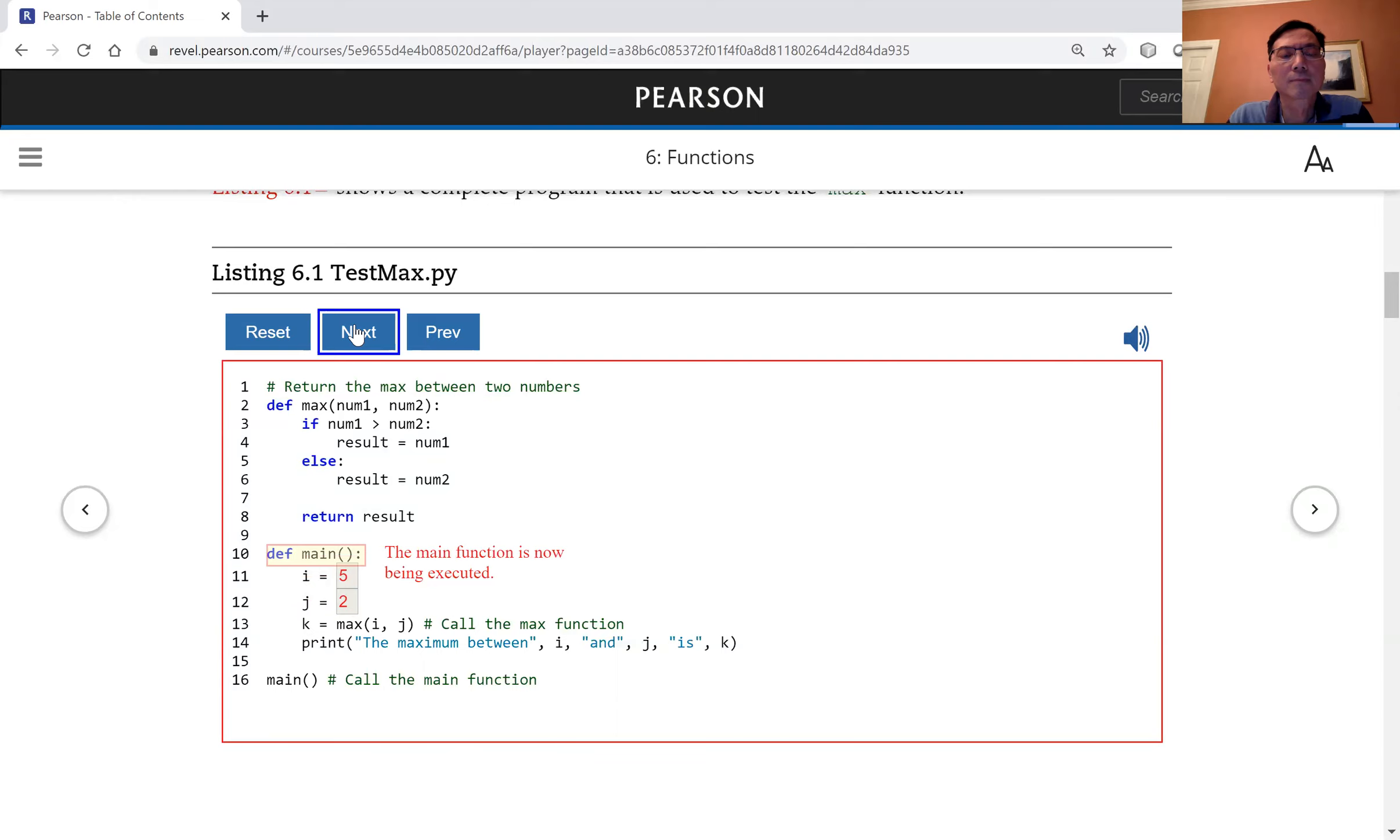The main function is now being executed. The statement assigns 5 to variable i. The statement assigns 2 to variable j. The statement will invoke the max function and assign the return value from the function to k.